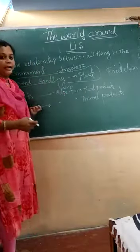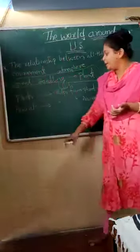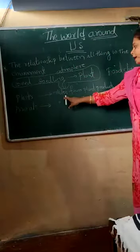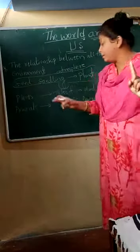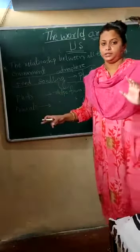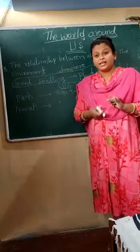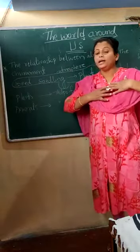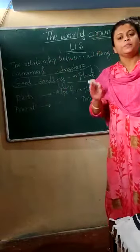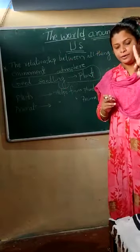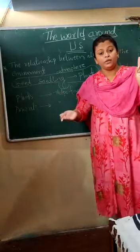Next we can see the relationship between plants and other things in nature. Plants will help in a variety of things. Plants give maximum help to other living things — including human beings, animals, birds, insects, small and big animals. All kinds of living things depend on plants as a food source. We all get our food from plants.